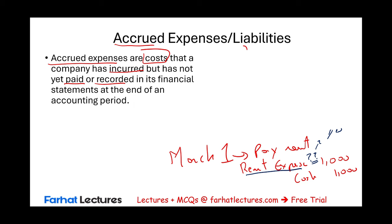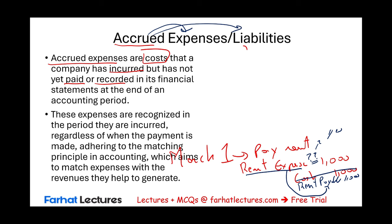So you have to record the rent expense of $1,000. You don't have the cash, so you're not going to credit cash. What you will do is credit rent payable $1,000. So rather than paying cash, the expense became a liability. This is why accrued expenses is the same thing as accrued liabilities — because you are accruing a liability.